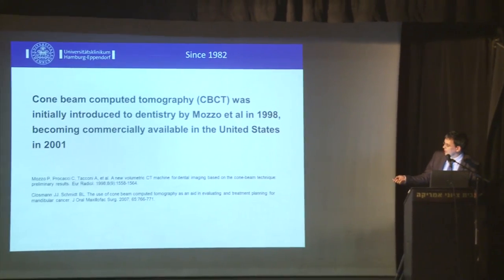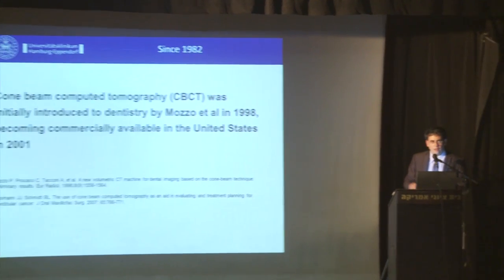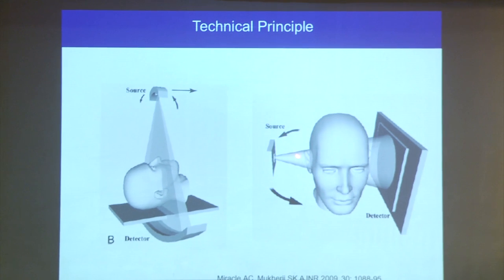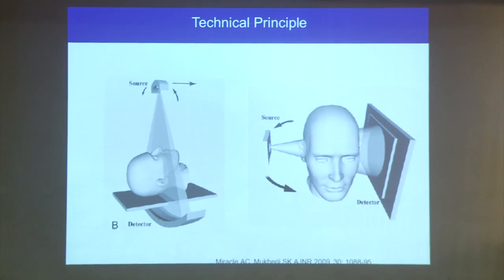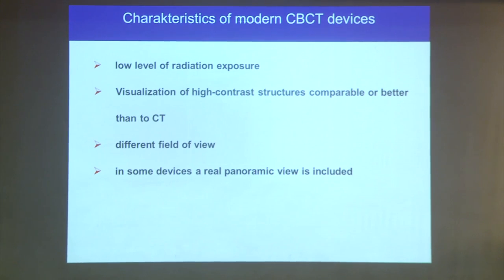Cone beam was introduced in 1998 and became commercially available in the USA in 2001. It mainly came from Italy — the NewTom device was the first on the market. Now it's also a dinosaur. The physical difference between CT and cone beam, as Jonathan showed earlier, is that we have a cone beam with a flat panel detector compared to the fan beam and detector array of a CT scanner.